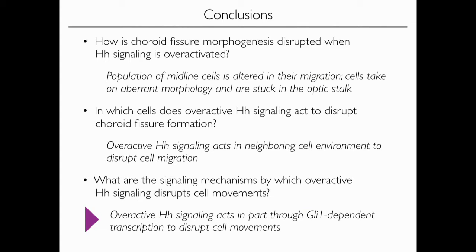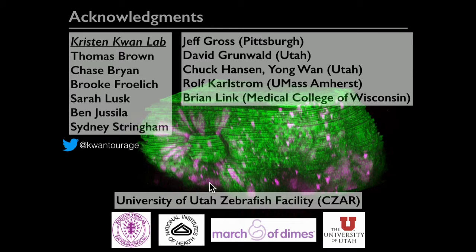In conclusion, we set out to identify how overactive hedgehog signaling disrupts choroid fissure formation. We identified a specific population of cells in the midline region that adopt an aberrant multipolar morphology, cease movement, and remain stuck in the optic stalk. This is at least in part due to non-cell autonomous mechanisms downstream of GLI1. I'd like to thank the lab, our collaborators, the University of Utah, and our funding sources. I'll take any questions.